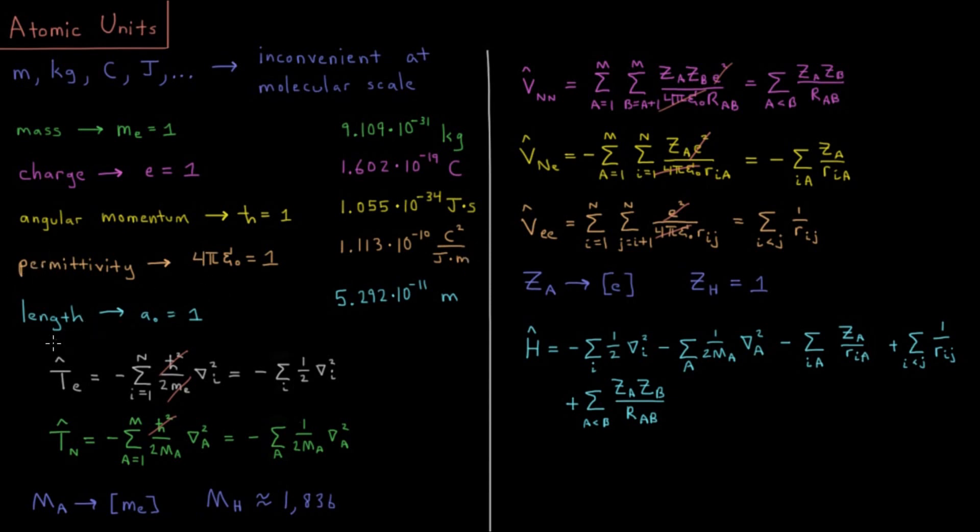And lastly, if you put all of these units together and see what unit of distance we get as a result, the length we get is called the Bohr radius, which is going to be our 1 of distance, which is about 5.292 times 10 to the negative 11 meters, or about 0.529 angstroms.